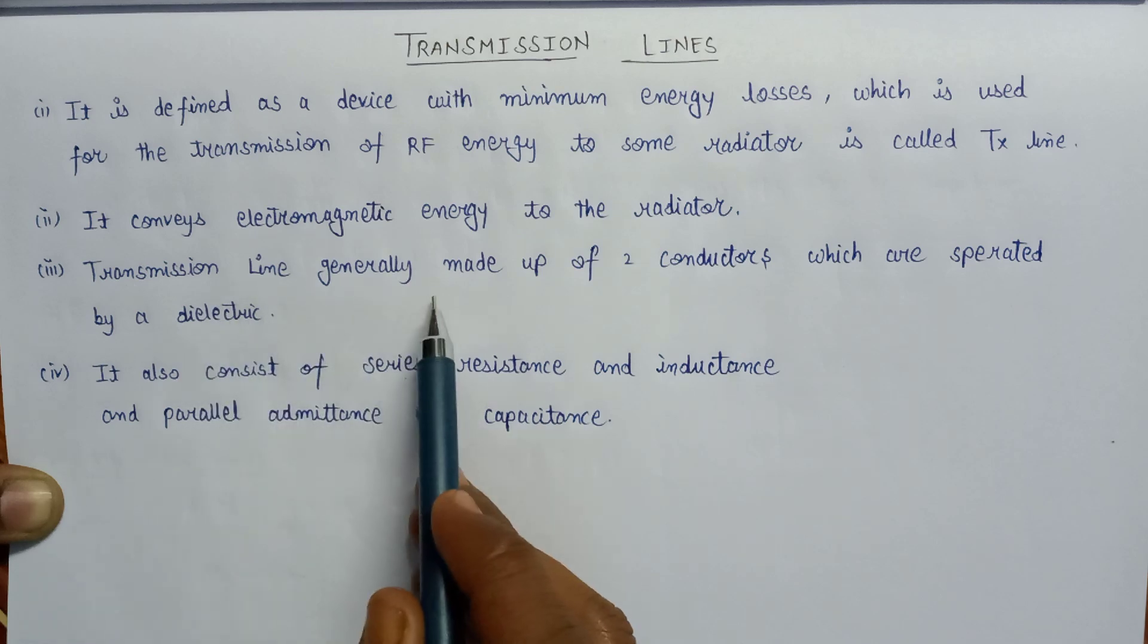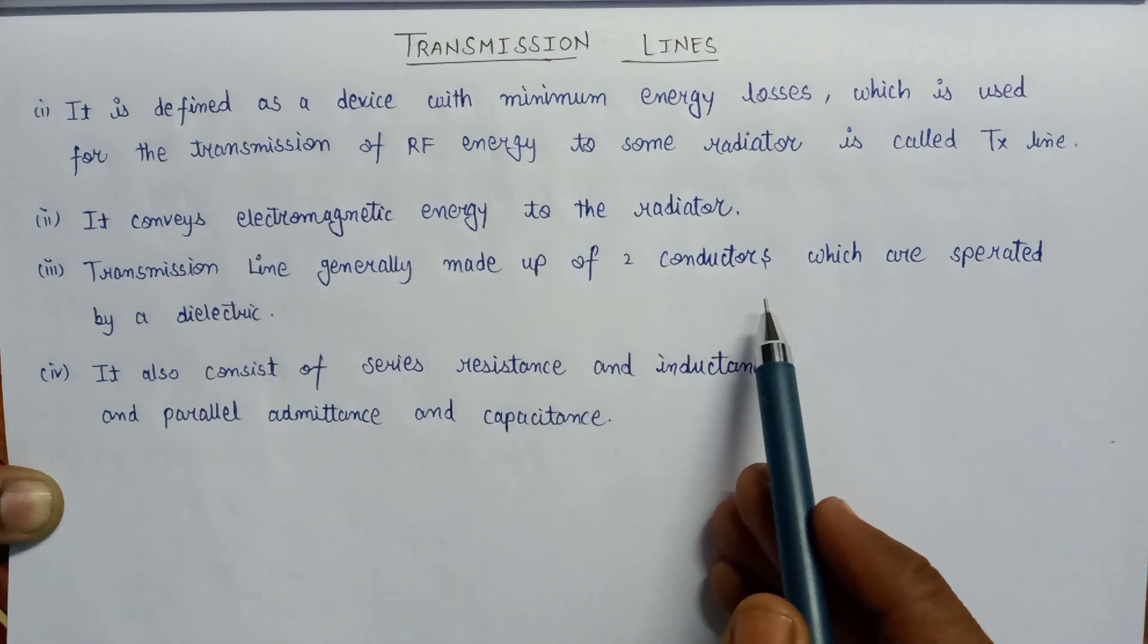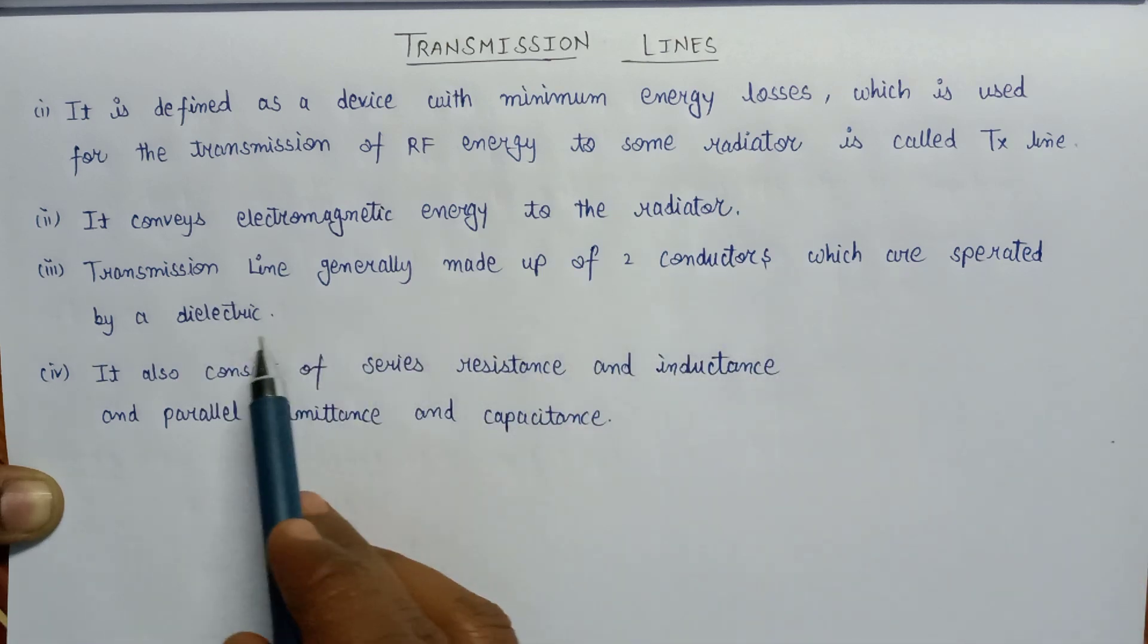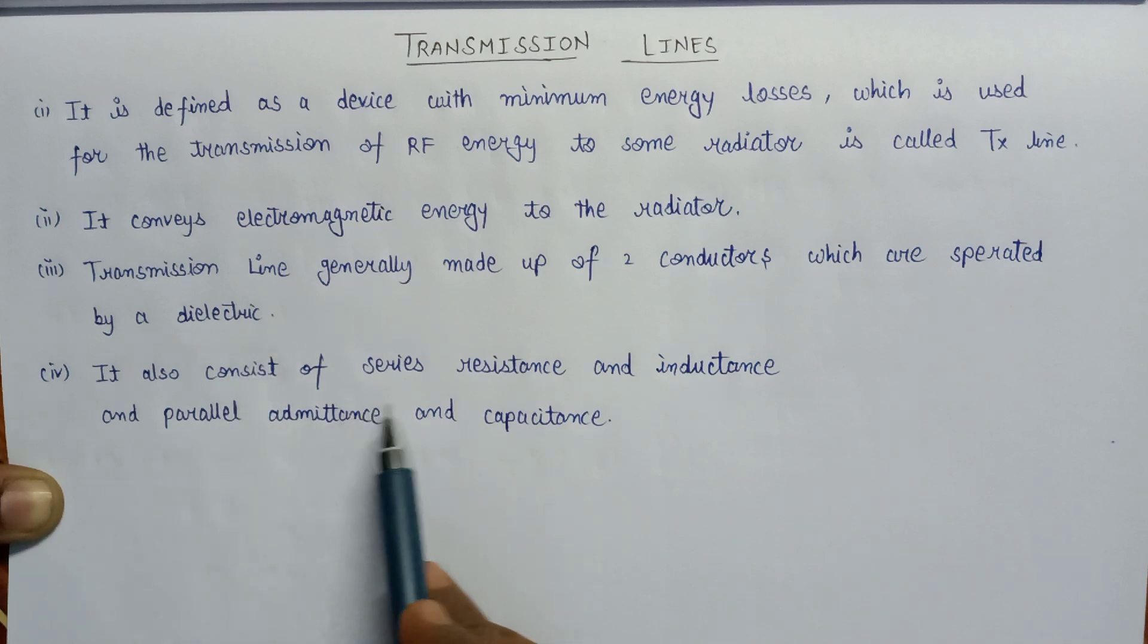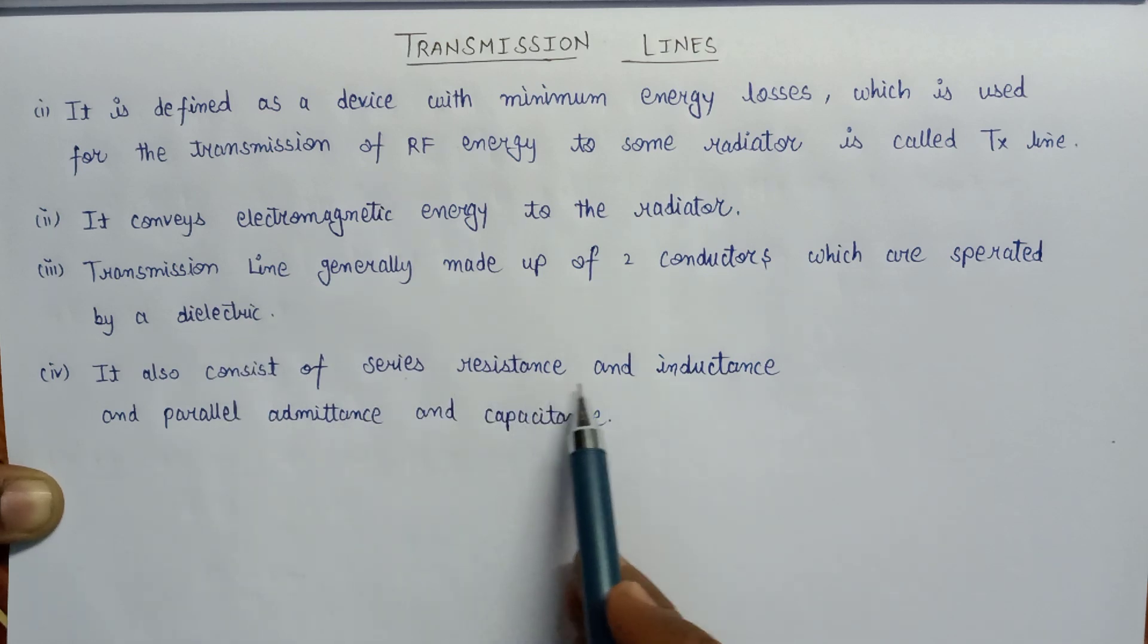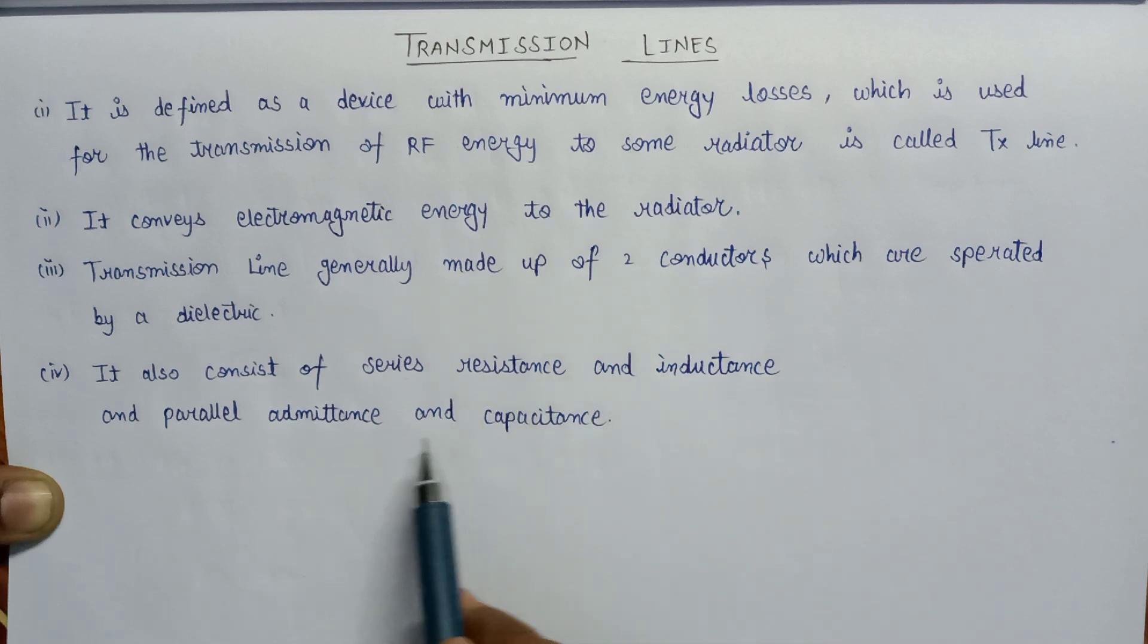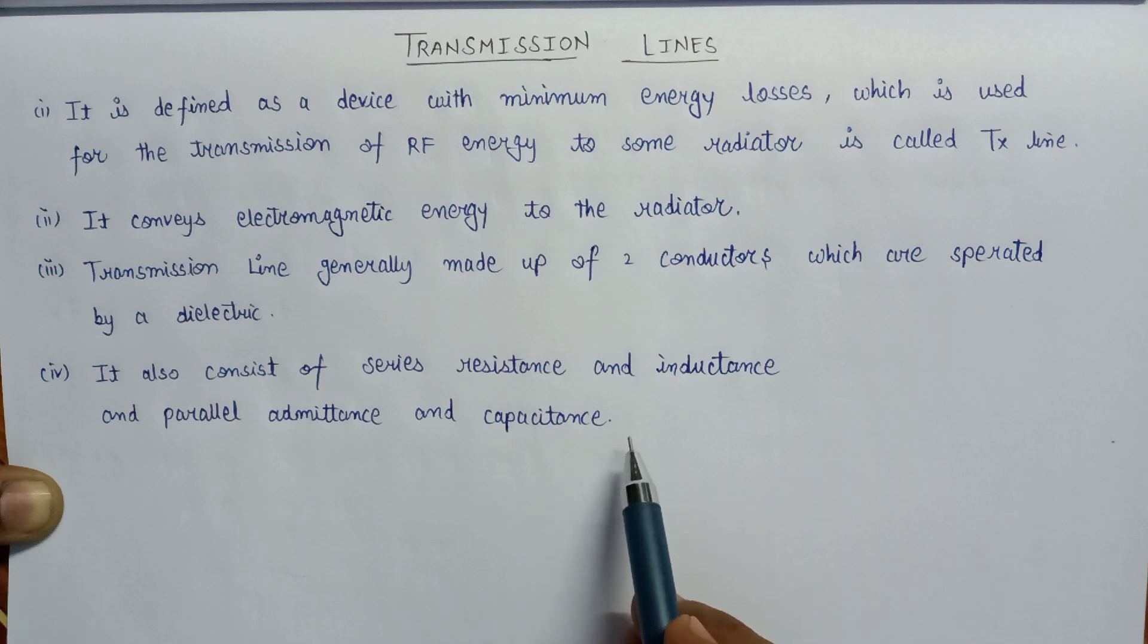Transmission line generally made up of two conductors which are separated by a dielectric. It generally consists of a series resistance and inductance, and the admittance and capacitance per unit length are being connected in parallel combination.